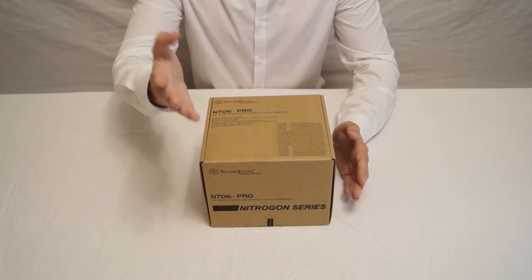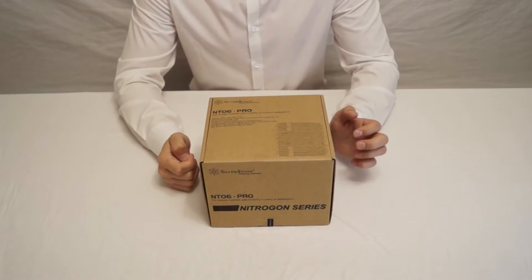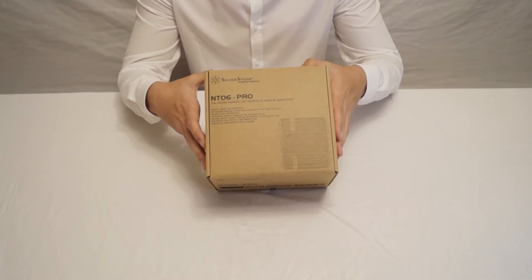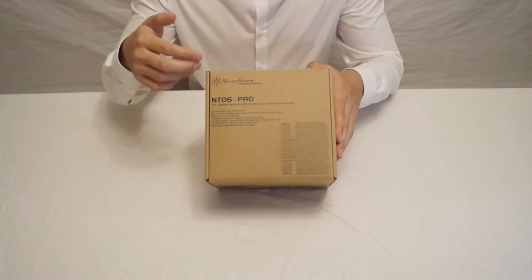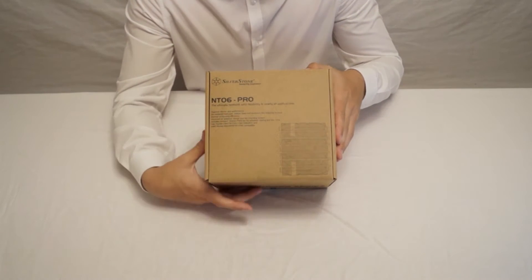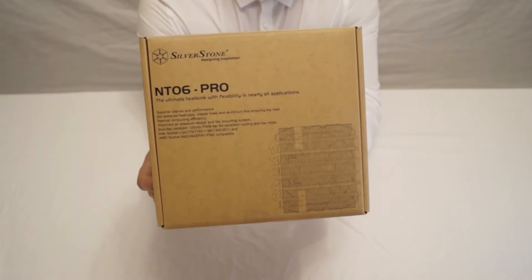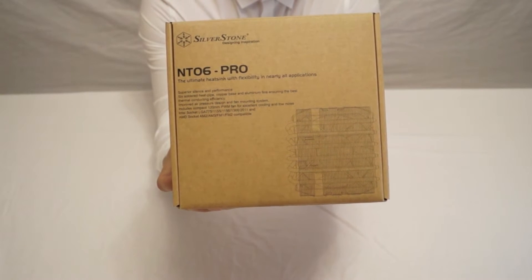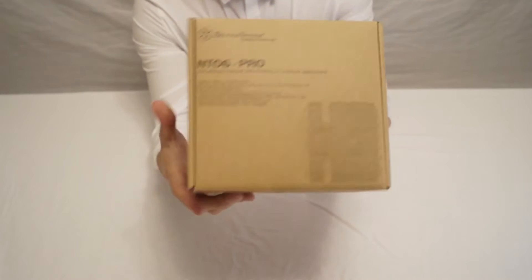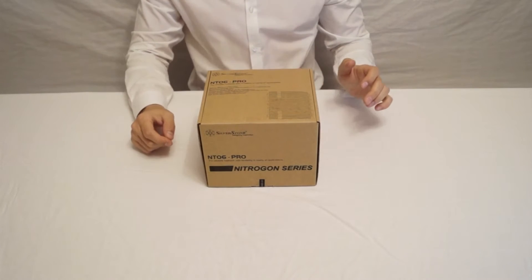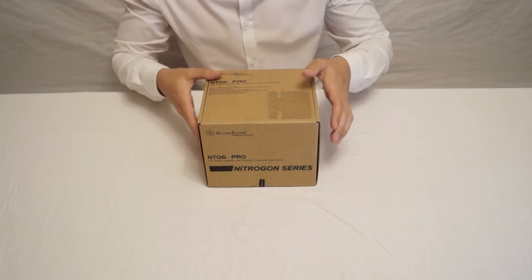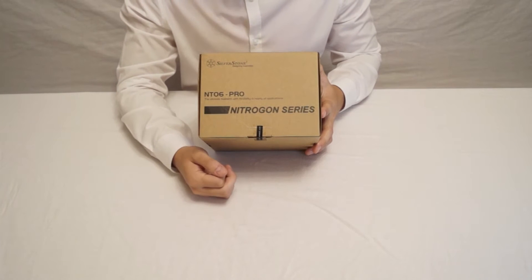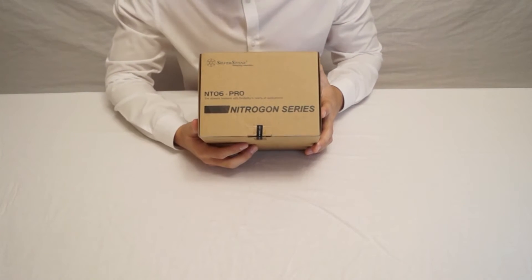Okay, so we've got you up at a really high angle there, almost bird's eye view. Let's go around the box first—there's not really much to see. There's basically just a description of the product. I'll bring that in so that if you want to pause and read it you can. It says superior silence performance and gives you a couple of features. For example, it is a six heat pipe cooler, which is a lot for a low profile CPU cooler. You've also got the nitrogen series branding there. The seal has been broken—I did that earlier.